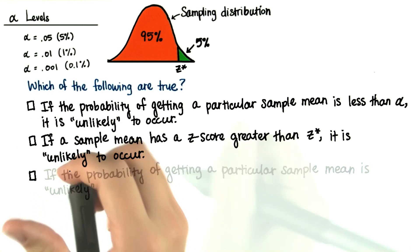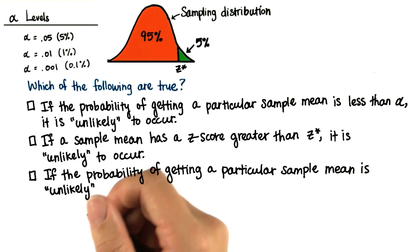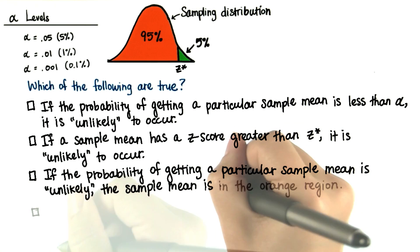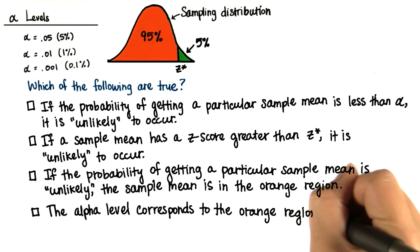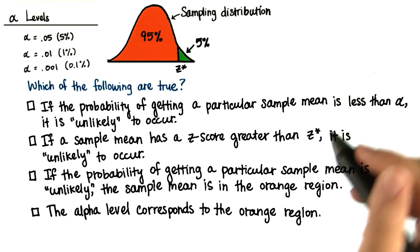Your third option is if the probability of getting a particular sample mean is unlikely, the sample mean is in the orange region. And finally, the alpha level corresponds to the orange region, true or not? Check all that apply.